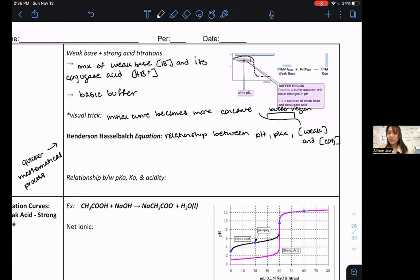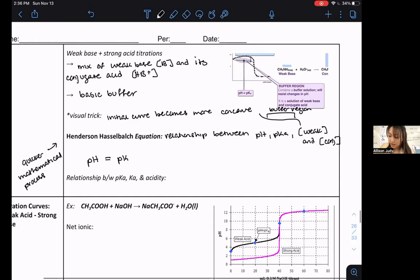So it's a quicker mathematical tool or process for quantifying any point in titration that involves, specifically the buffer region of the titration. And so what we get is our equation, Henderson-Hasselbalch says that pH is equal to pKa plus log of the conjugate base all over the acid concentration.